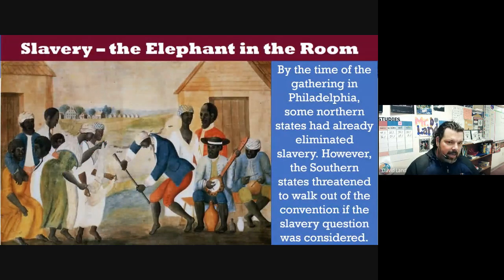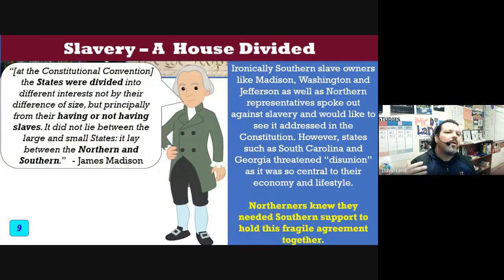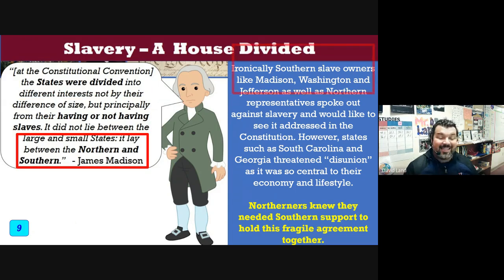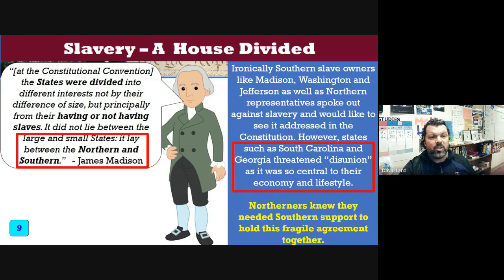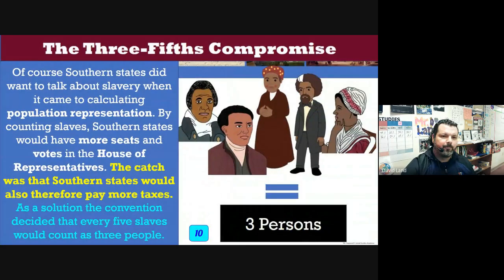The big elephant in the room was the issue of slavery. The southern states depended on slavery and threatened to walk out of the convention — they didn't even want slavery mentioned in the constitution, which coincidentally it isn't. When the issue was brought up, southern slave owners like Madison and Jefferson spoke out against slavery and wanted it addressed. But southern states were against this. As Madison noted, the real divide was not between large and small states — it lay between the northern and southern states.